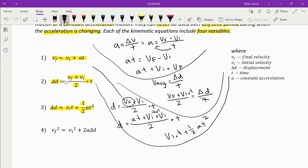By now you probably get the gist of it. If you want to derive the fourth kinematic formula yourself, you can do that by substituting the value of T from the first equation into the second equation.